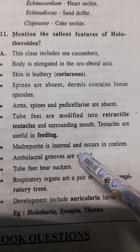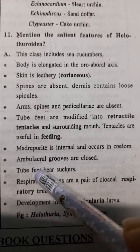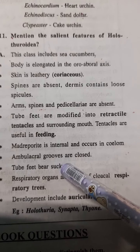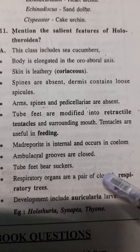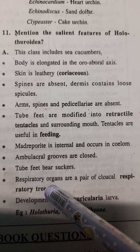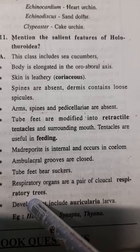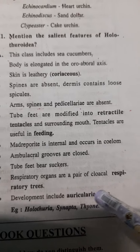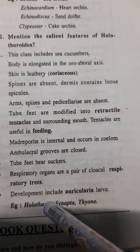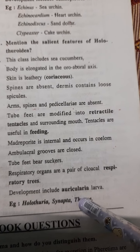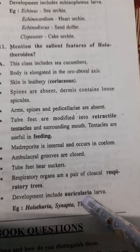Ambulacral grooves are closed. Tube feet bear suckers. Respiratory organs are a pair of cloacal respiratory trees. Development includes indirect development with an auricularia larval stage. Examples include Holothuria and Synapta.